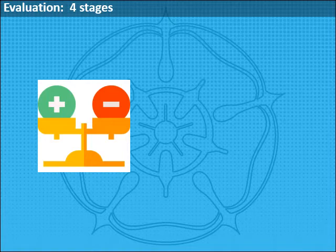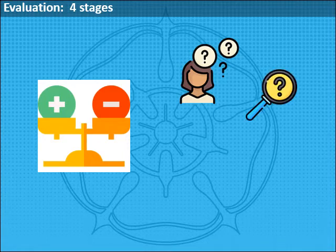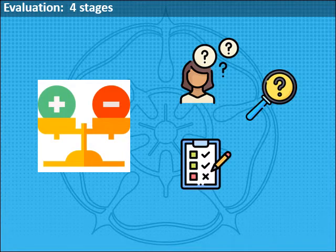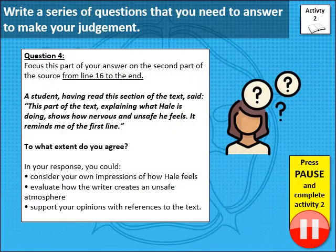There are four steps we need to go through. First, we need to formulate a series of questions based on the task. Second, examine the text and find answers to those questions — evidence. Third, evaluate the evidence: weigh it up and make your judgments. And finally, justify your views by making clear claims and supporting them with evidence. We're going to start by formulating our questions — our criteria for our evaluation. Read the question carefully and write a series of questions that you need to answer to make your judgment. Press pause, complete activity two, and press play when you're ready to move on.